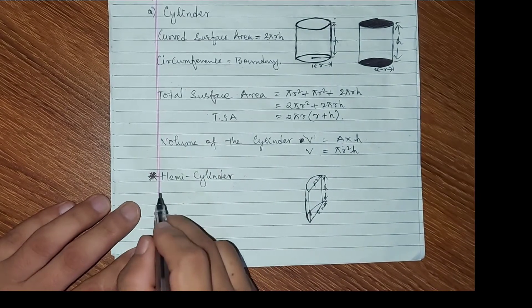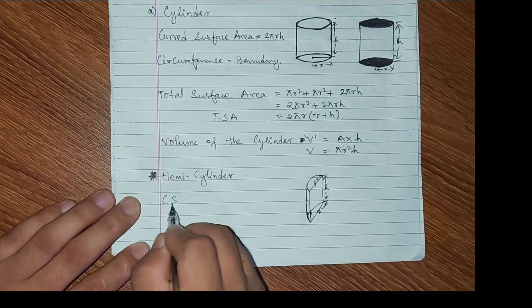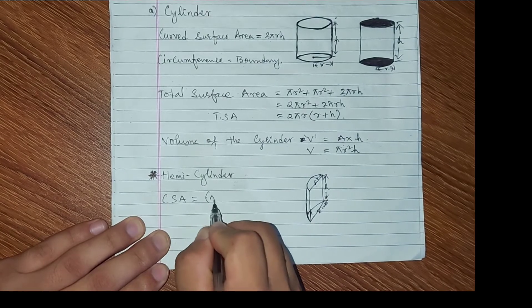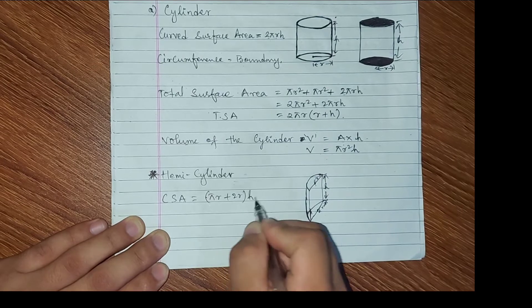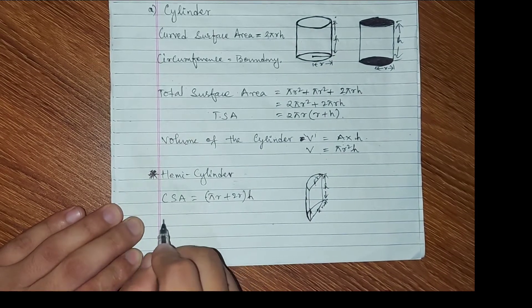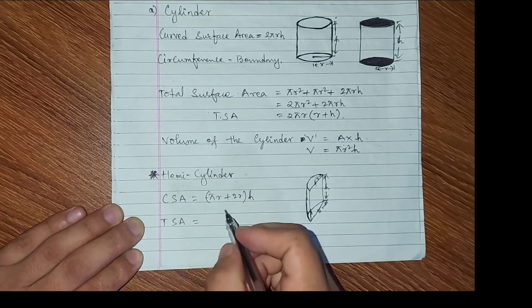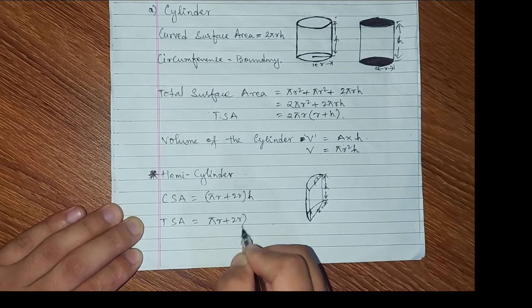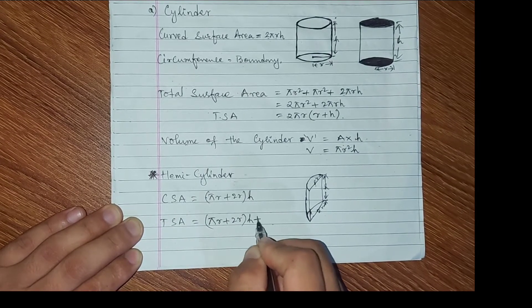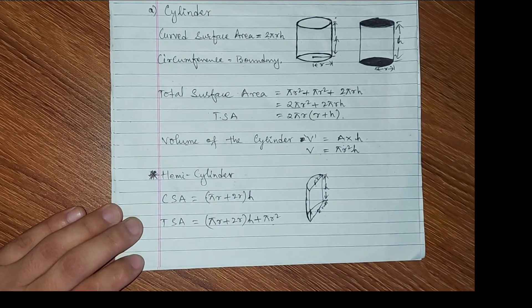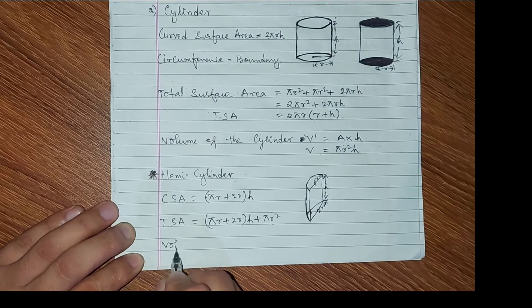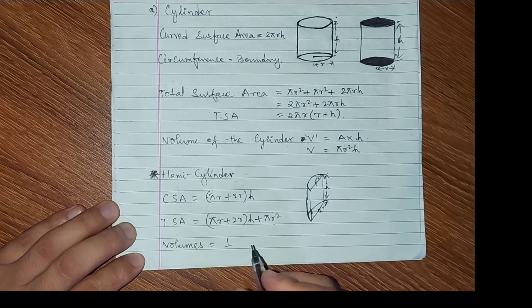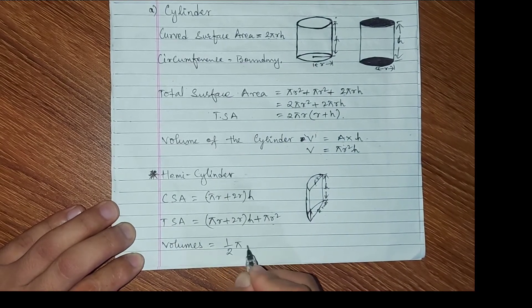For a half cylinder: the curved surface area CSA formula is π r + 2r into h. And the total surface area TSA is π r + π r + 2r into h + π r². Volume of half cylinder is half of πr²h, so Volume = ½ πr²h.